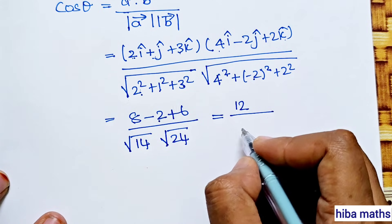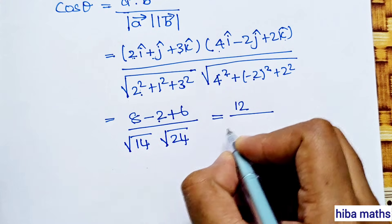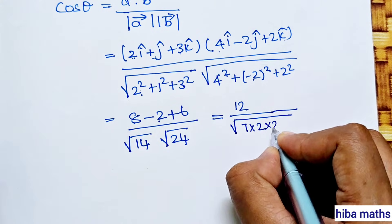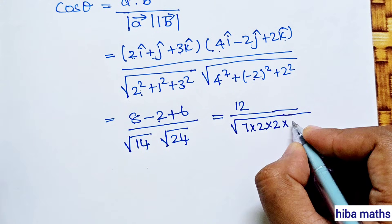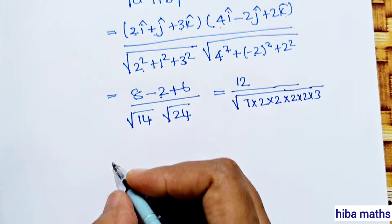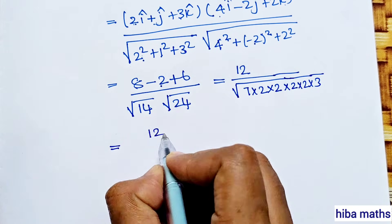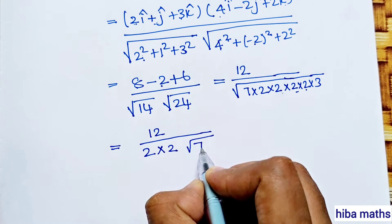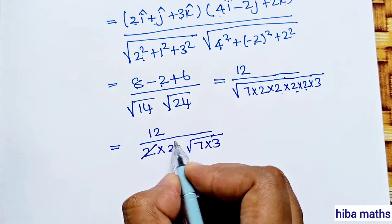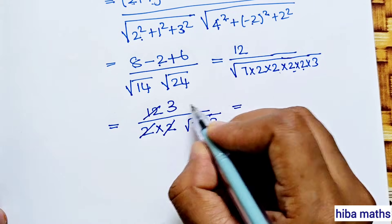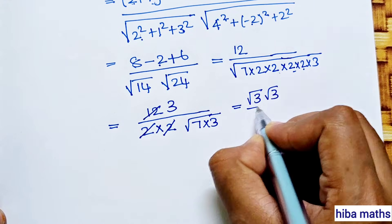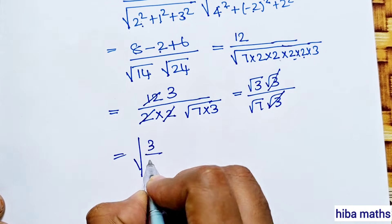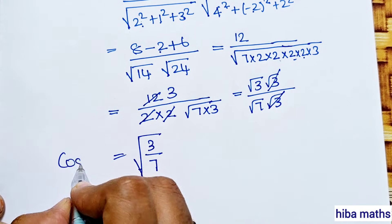So we have 12 divided by root 14 into root 24. We can split: 14 is 7 times 2, and 24 is 4 times 6. Joining them: root 2 and root 2 cancel, leaving root 3 in the numerator. After cancellation, cos theta equals root of 3 by 7, which is the value of cos theta.